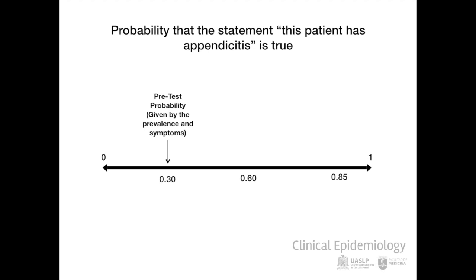Suppose we do a blood count and shed 12,000 leukocytes. This increases our certainty to 60%. That is, this diagnostic test doubled our previous belief. We could say it is a good test.